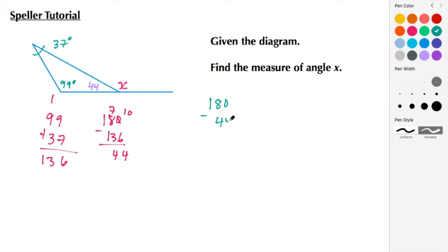So that is 180 minus 44. Again, we have to regroup. So we have 10 minus 4 to give us 6, 7 minus 4 to give us 3, and then we bring down the 1. So here we see that the measure of angle x is